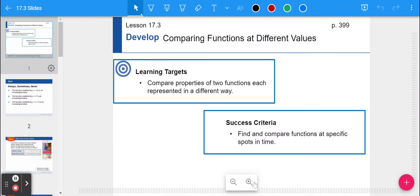It is section 17, day 3 of comparing functions at different values. This is going to start on page 399 in your math book, so please open up to that page. Our learning target is the same as it has been to compare properties of two functions, each represented in a different way. And today, specifically, we're going to find and compare functions at different spots in time or different values.